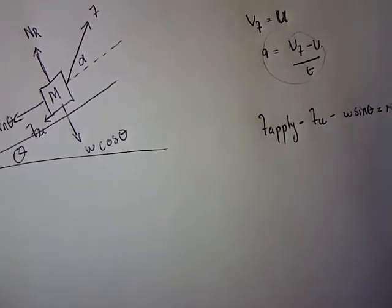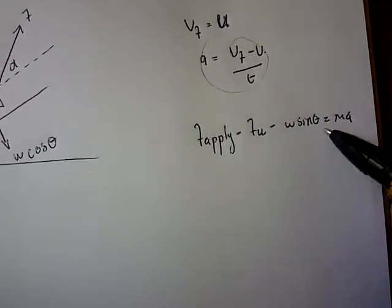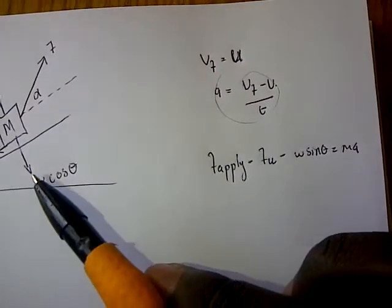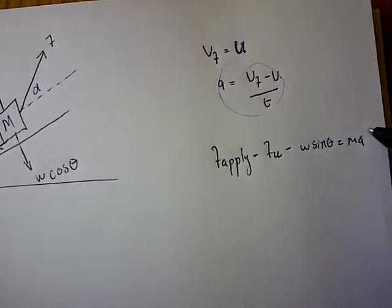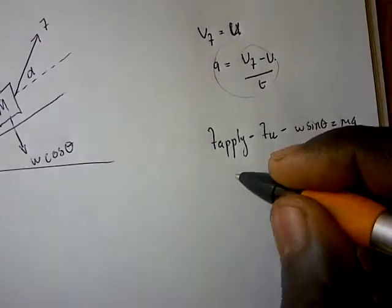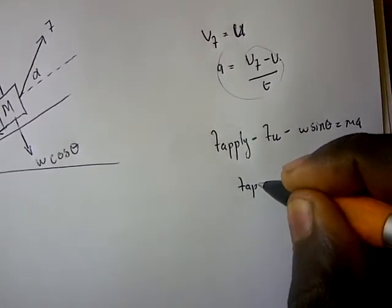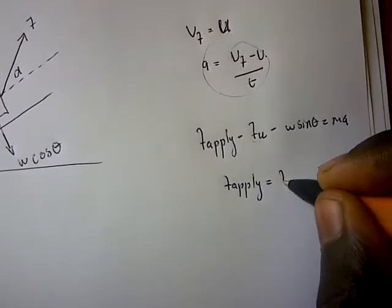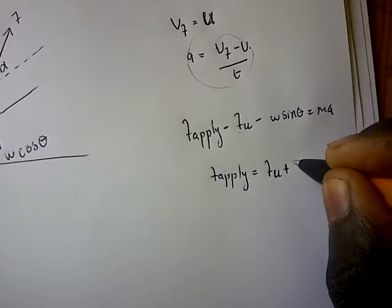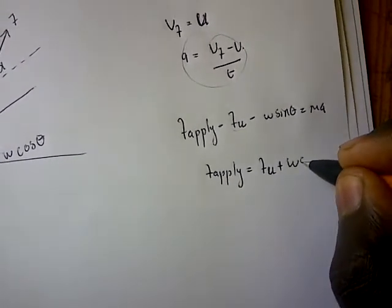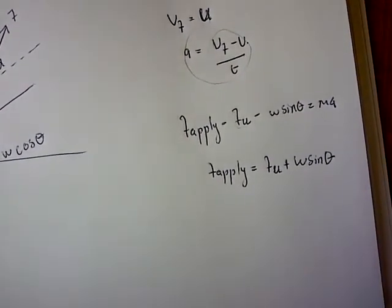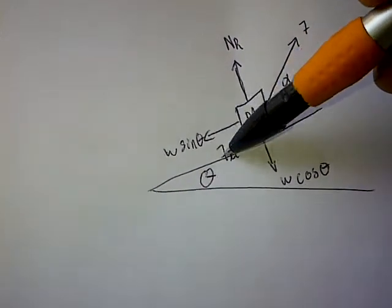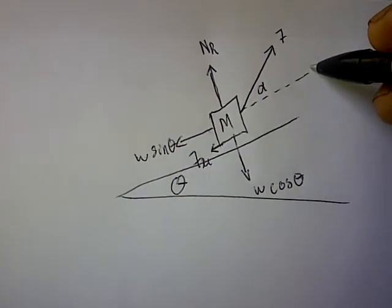We know the formula: force applied minus frictional force minus w·sinθ equals m·a. Since the body is moving at constant velocity, acceleration is zero. Therefore, force applied equals frictional force plus w·sinθ.